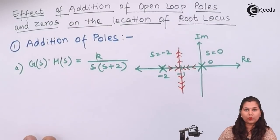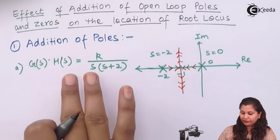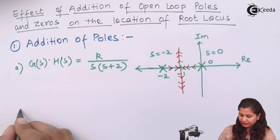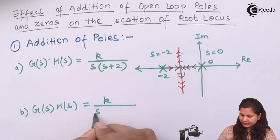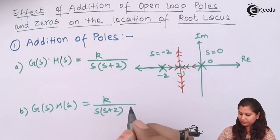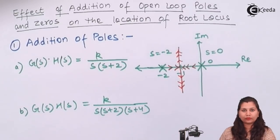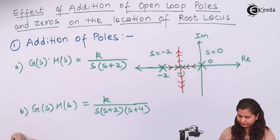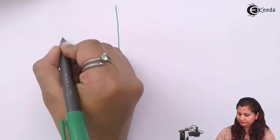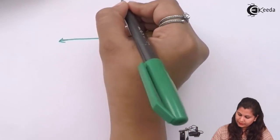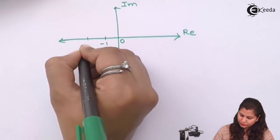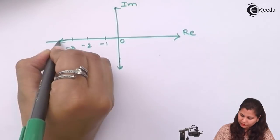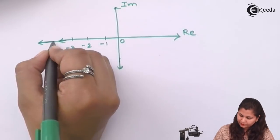Now we are going to add poles to this transfer function. So in the denominator we are adding terms. The second transfer function is G(s)H(s) = k upon s(s+2), and we are adding another pole s+4 here. So now we will see the root locus for this. Here we have the imaginary axis and real axis, with points at s equals to 0, minus 1, minus 2, minus 3, and minus 4.